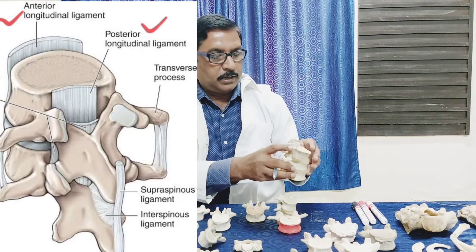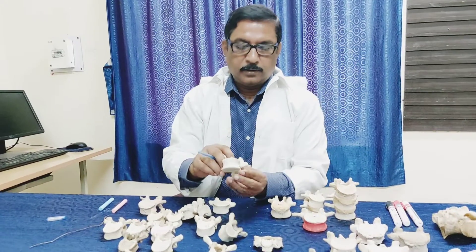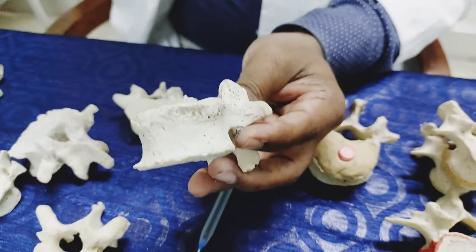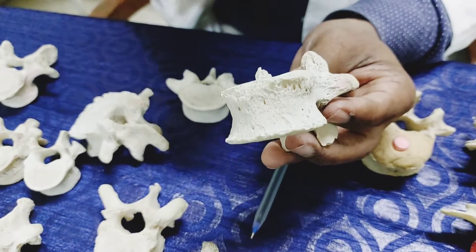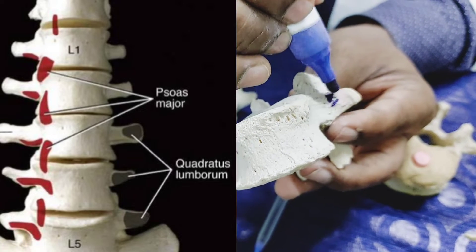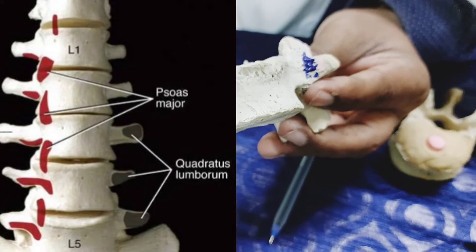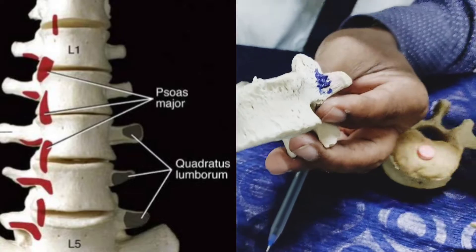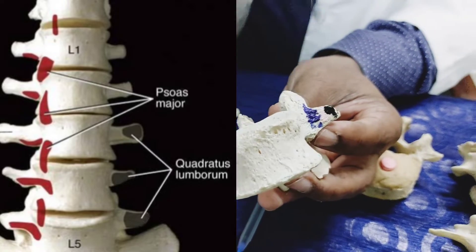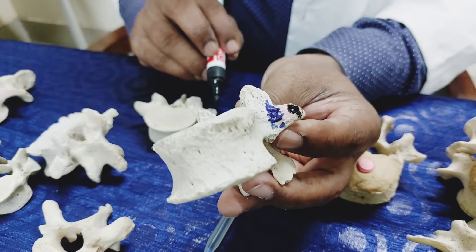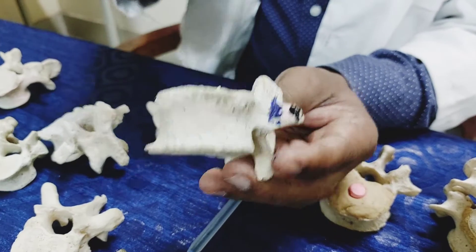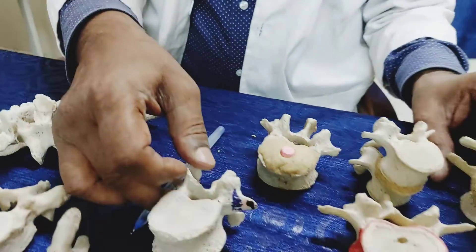The transverse process of a lumbar vertebra has a ridge on its anterior surface. Medial to this ridge is the attachment of the psoas major muscle. Lateral to this ridge is the attachment of another muscle — quadratus lumborum. In between these two muscles, the ridge provides attachment for the anterior layer of the thoracolumbar fascia. From the tip of the transverse process is the attachment of the middle layer of the thoracolumbar fascia.